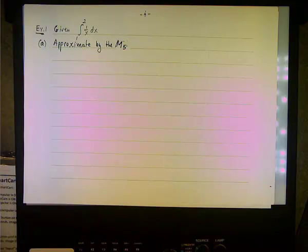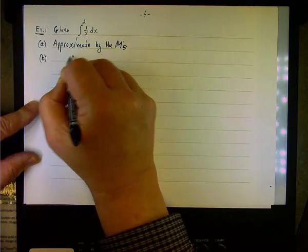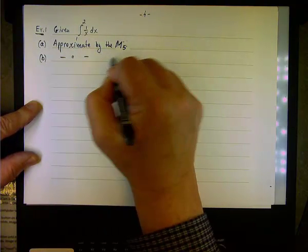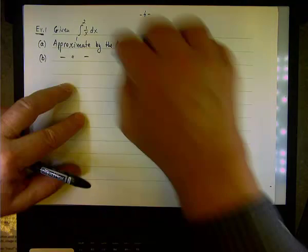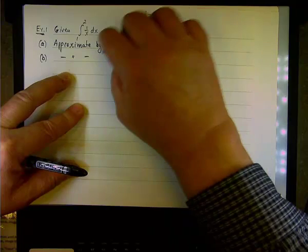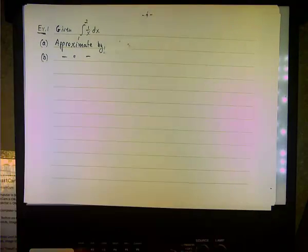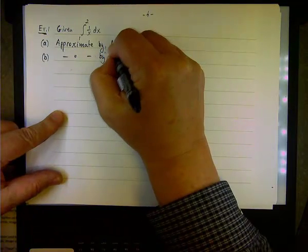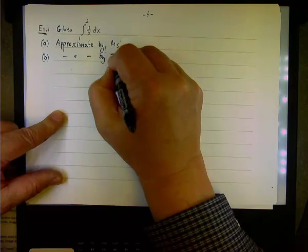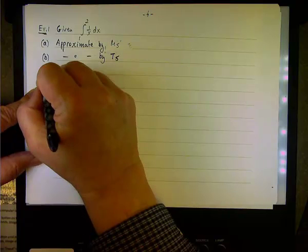Likewise, the next part we're going to approximate using the trapezoidal rule. Let me rewrite it. I have an unnecessary V in there. So approximate by, first, let's do the midpoint with 5 intervals. Second, let's do the trapezoidal with 5 intervals.